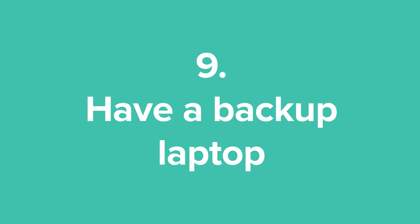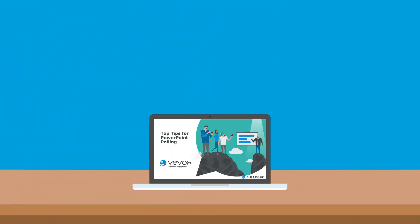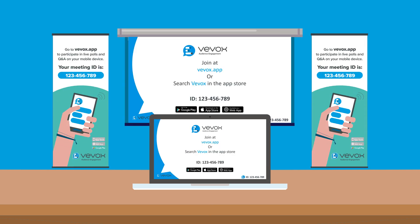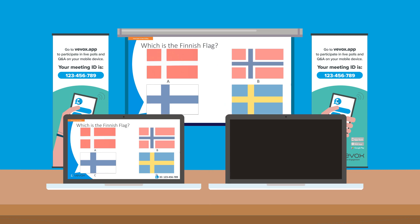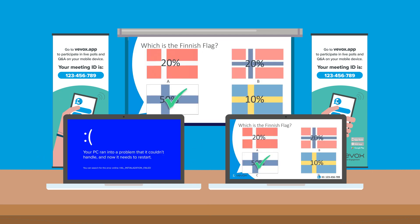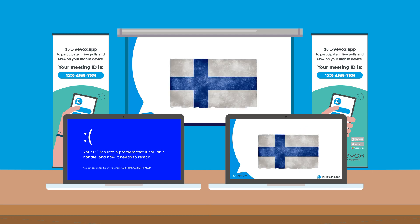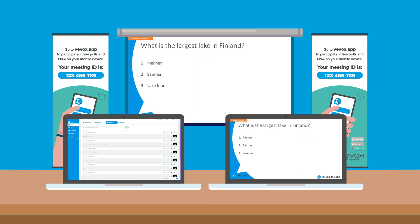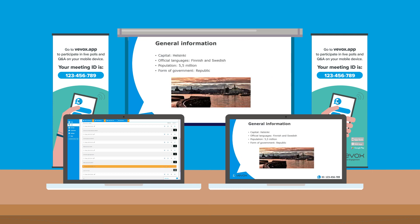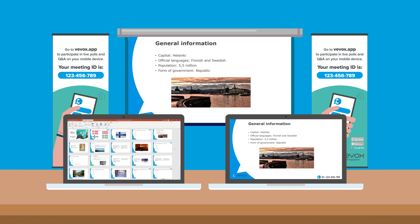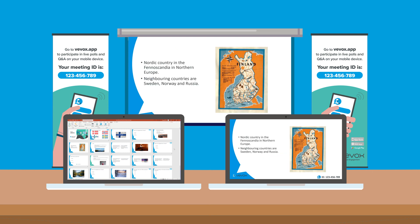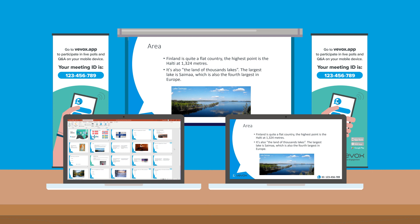Tip 9: Have a backup laptop. PowerPoint polling is designed to be run on one laptop, but for larger or high-profile events, as with any equipment, a backup laptop is a great insurance policy. The backup serves two purposes: in case of any technical issues with the main laptop, it can instantly take over all polling duties. It also offers a second screen to review incoming questions from the polling app's Q&A feature, or to view the PowerPoint presentation in slide sorter with its slide numbers and notes. Talk to your AV provider or the Vivox team about how best to set this up.